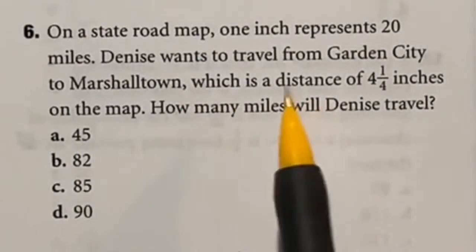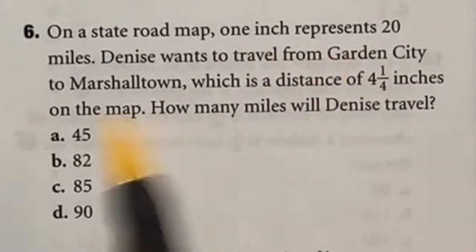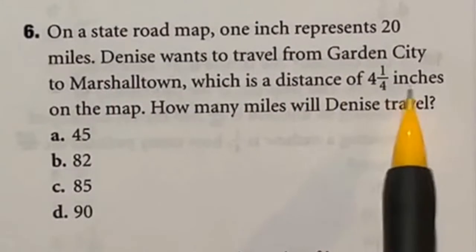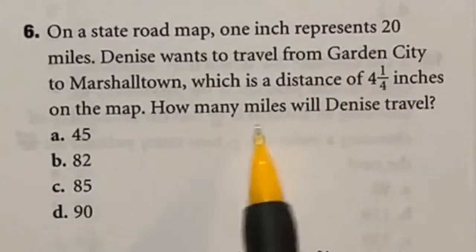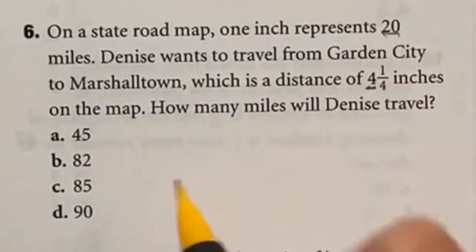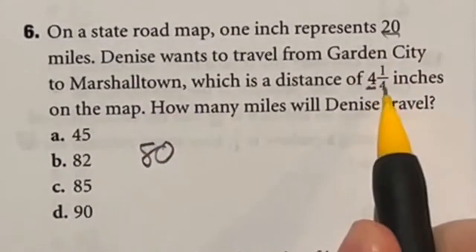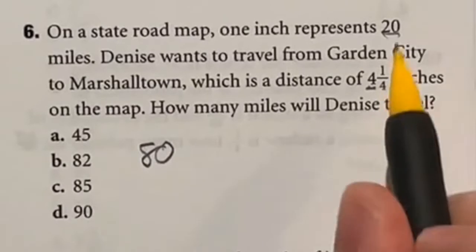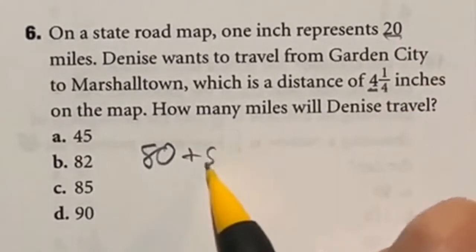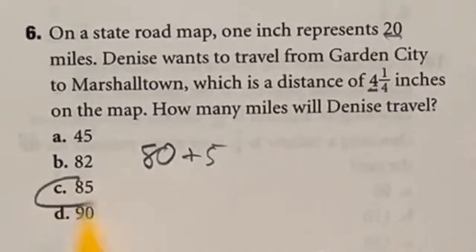So for number 6, they're saying that one inch on this map represents 20 miles, and on the map they're going to be traveling 4 and a fourth inches, and they want to know how many miles that's going to be. So I just need to go ahead and do 4 times that 20 to give me 80. And I still have another one fourth of an inch. Well, 20 divided by 4 is 5. So I want to add 5 to that 80, giving me a final answer of 85.